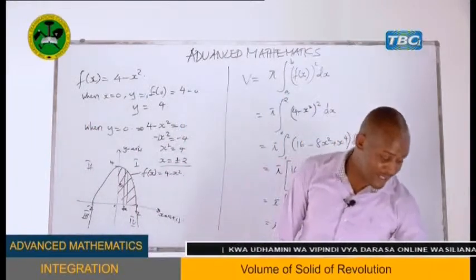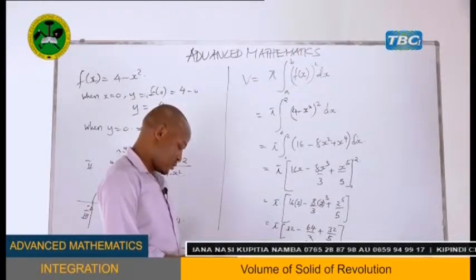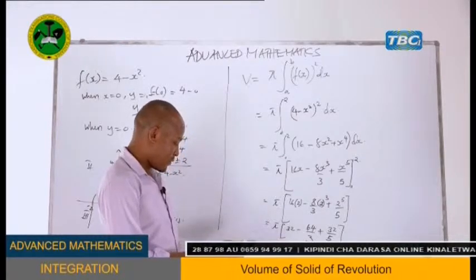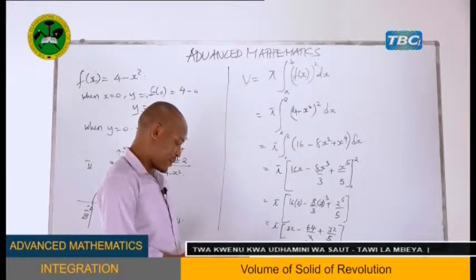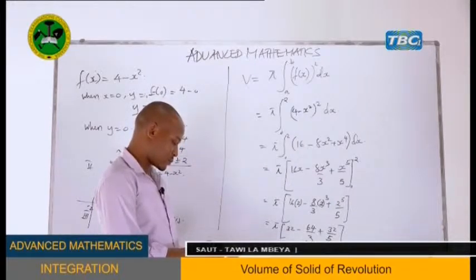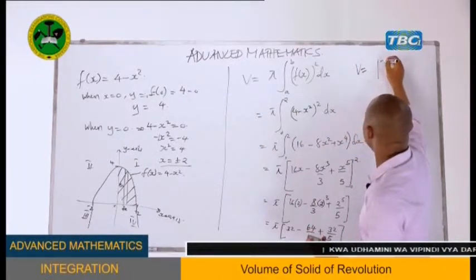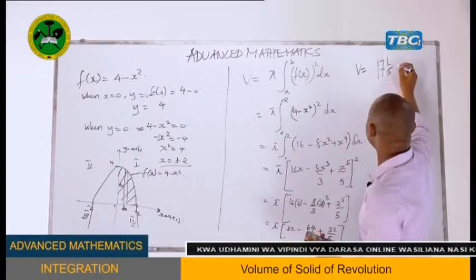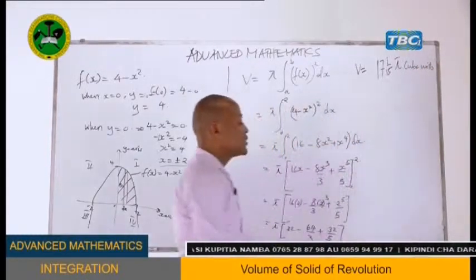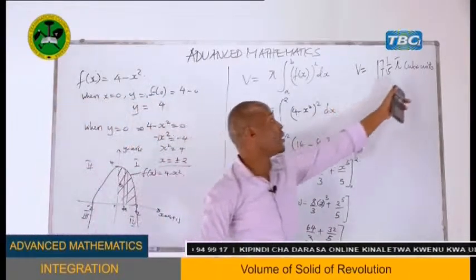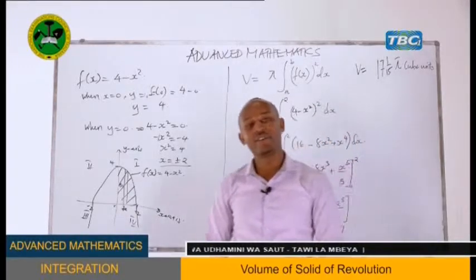Using our calculator: 32 - 64/3 + 32/5. The answer obtained is 512/15 π cubic units. Don't forget to write cubic units because this is a volume — we expect the units to be cubed. That is how we find the volume of revolution when rotated about the x-axis.